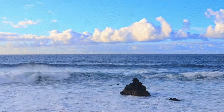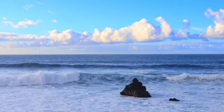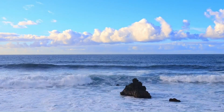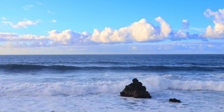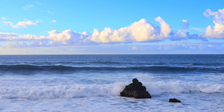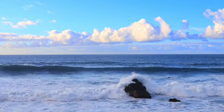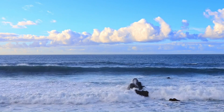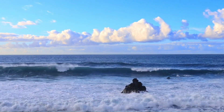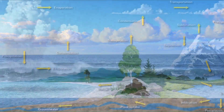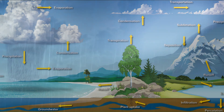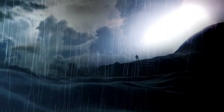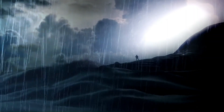As the Earth continued to cool, the water vapor in the atmosphere condensed, forming the first oceans. The Earth's atmosphere started to change, with the water cycle becoming more active and gases like methane and ammonia decreasing.